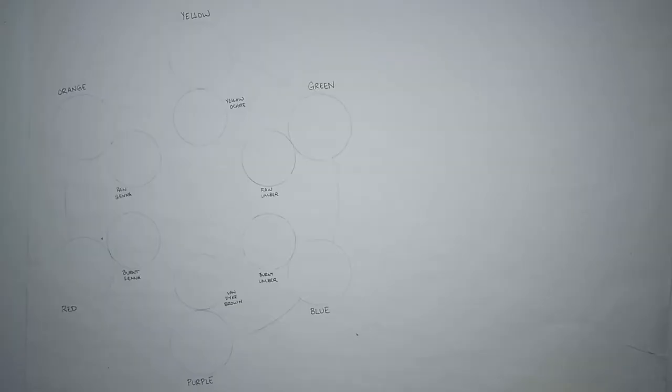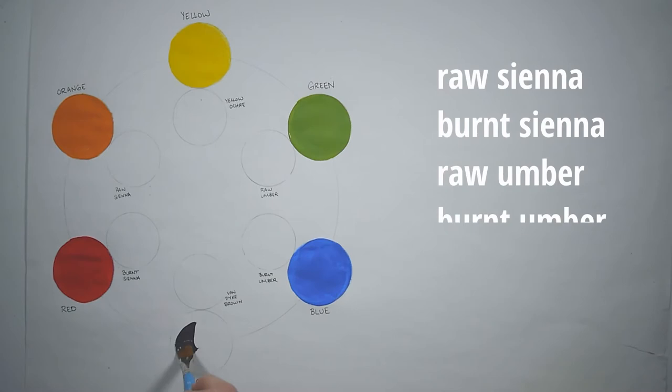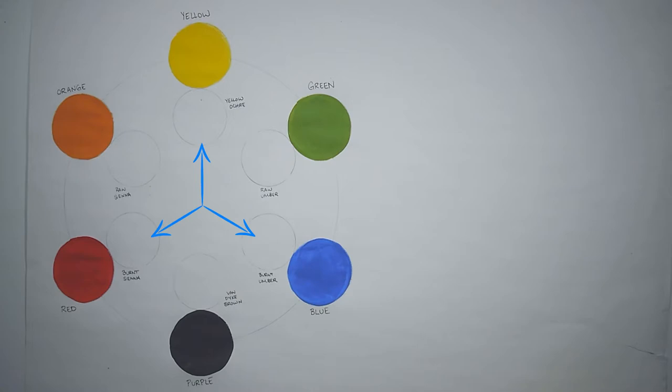First, fill out a standard color wheel. I used Brilliant Red, Lemon Yellow, and Phthalo Blue from Roscoe. The six most common earth tones are Raw Sienna, Burnt Sienna, Raw Umber, Burnt Umber, Yellow Ochre, and Van Dyke Brown, and the base color for each of these is a primary or secondary color.